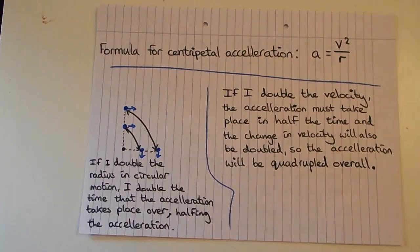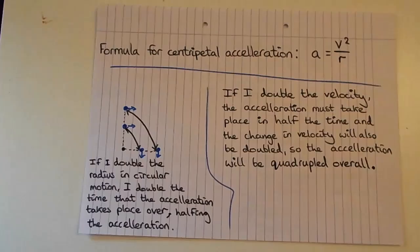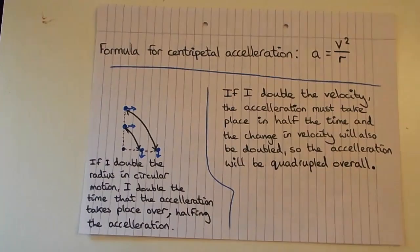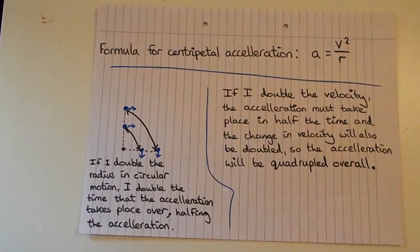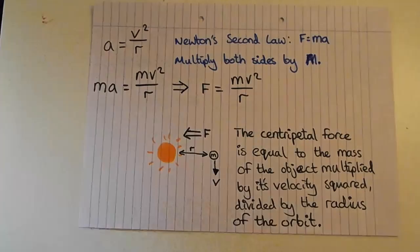If I hold the string length constant but double the spin speed, the acceleration has to act in half the time because the object covers the same distance twice as fast — that doubles the acceleration. On top of that, the change in velocity also doubles, because moving 180 degrees completely reverses the velocity direction. So doubling velocity quadruples acceleration, and tripling velocity gives nine times the acceleration — hence the v² dependence.